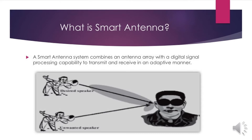A smart antenna system combines an antenna array with digital signal processing that has the capability to transmit and receive in an adaptive manner. For example, there is a signal from a desired speaker and there is also noise from an unwanted speaker — both signals are received at the receiver end.